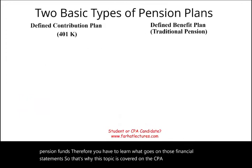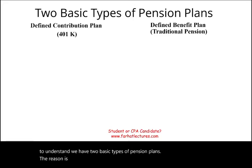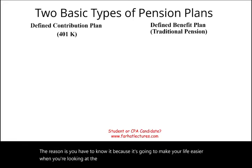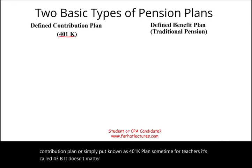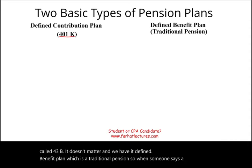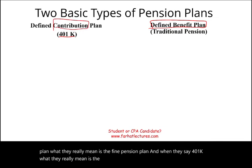We have two basic types of pension plans, and you need to know this because it makes reading financial statements easier. We have what's called a defined contribution plan — simply known as a 401k plan, or 403b for teachers. And we have a defined benefit plan, which is a traditional pension. When someone says 'pension plan,' they mean the defined benefit plan; when they say '401k,' they mean the defined contribution plan.